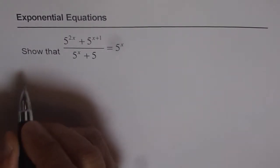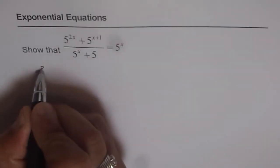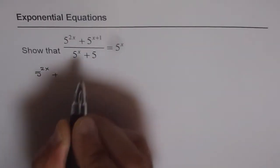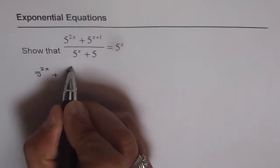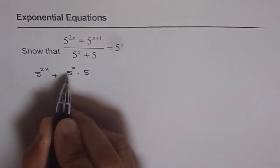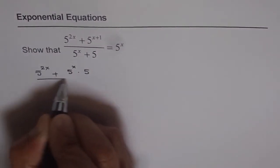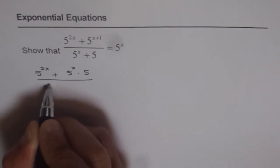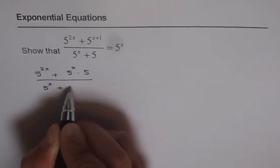5 to the power of 2x plus 5 to the power of x plus 1. Now, 5 to the power of x plus 1 can be written as 5 to the power of x times 5. In the denominator we have 5 to the power of x plus 5.